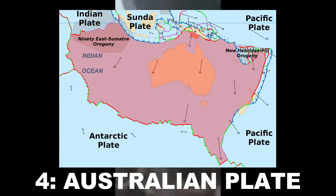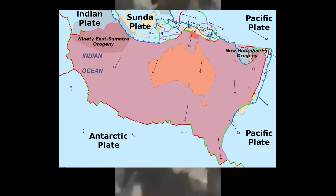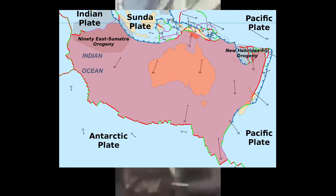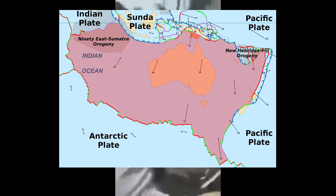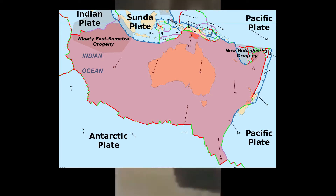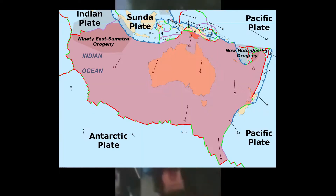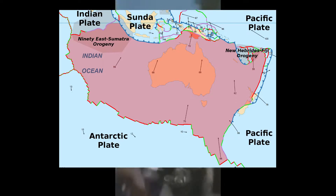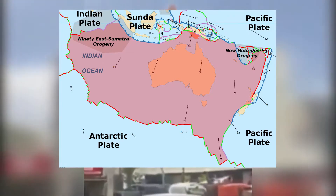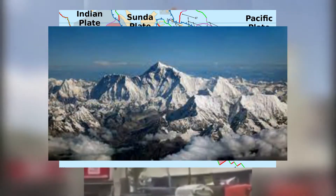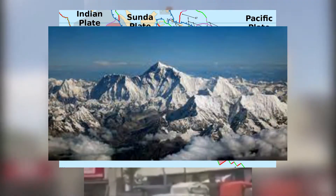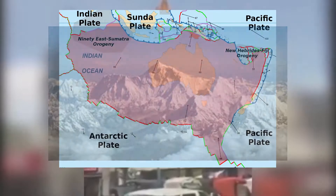Number four: Australian Plate. There is a general confusion whether the Australian plate should also include the Indian Plate. While the two plates generally move north, the Indian Plate moves much more slowly due to the collision with the Eurasian Plate, which forms the Himalayas.